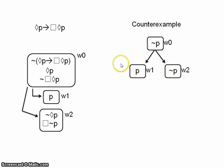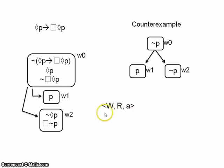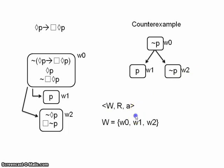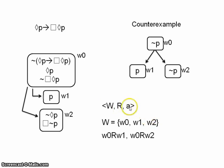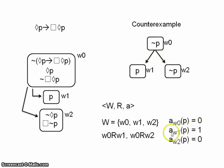We can translate this into formal logical terms. We have our model W, R, A. W is the set of worlds {w0, w1, w2}. R shows that w1 is accessible from w0, and w2 is accessible from w0, with no other relations. The assignment function gives P at w0 as 0, P at w1 as 1, and P at w2 as 0. Pretty simple to see that. Let's take a look at another argument.